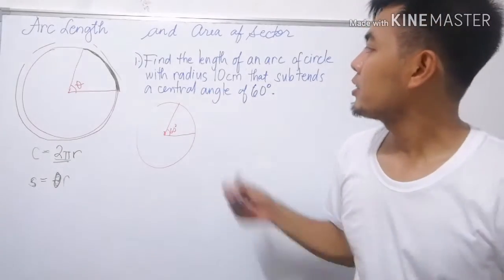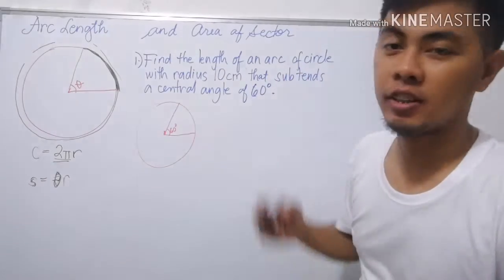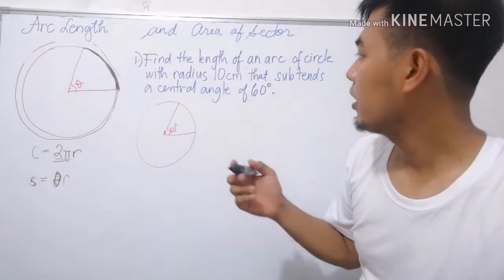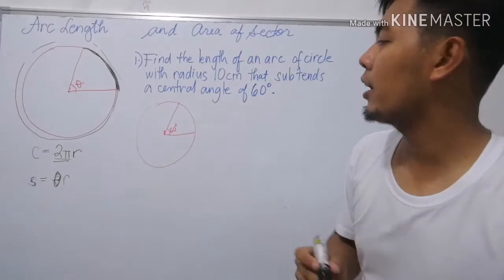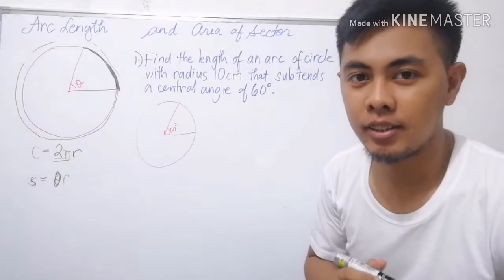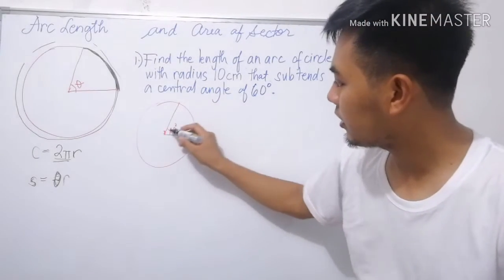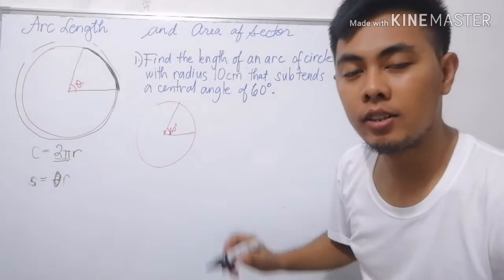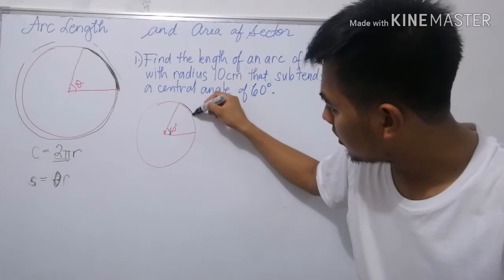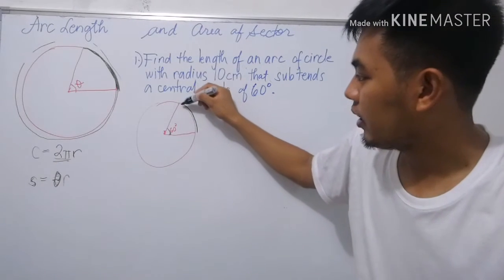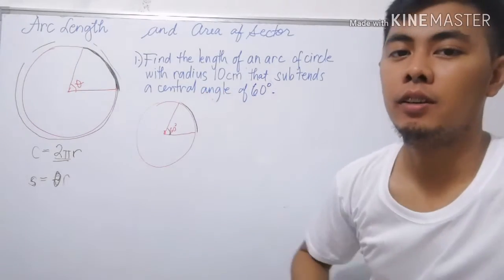Let's try an example. Number 1: Find the length of an arc of a circle with radius 10 cm that subtends a central angle of 60 degrees. If we're going to draw a sector with the central angle of 60 degrees, what is the arc length?